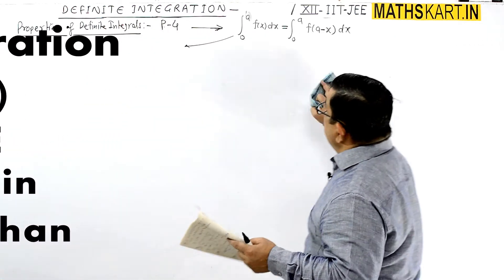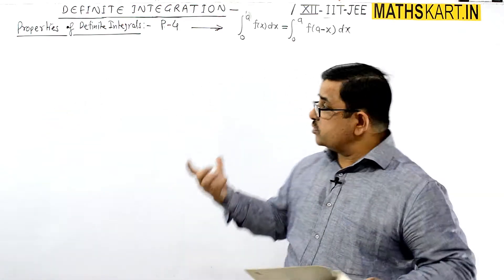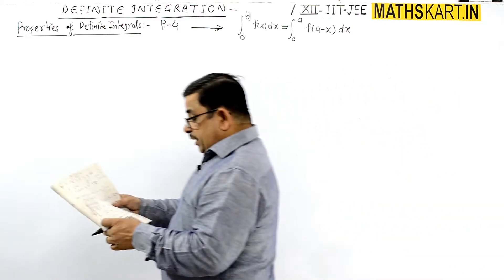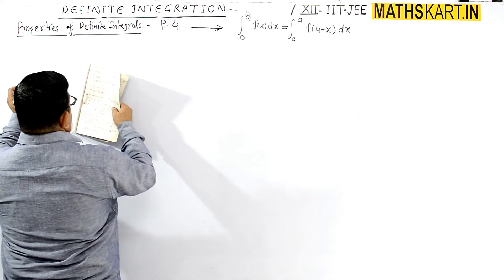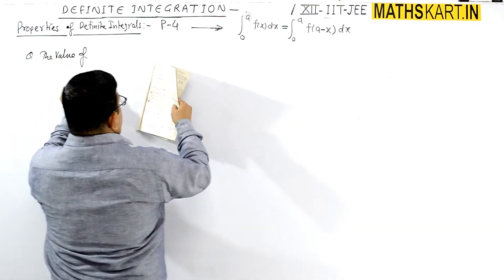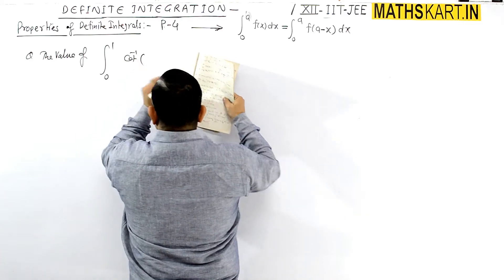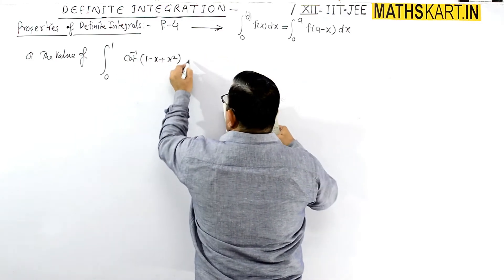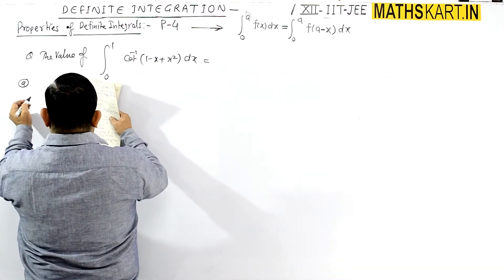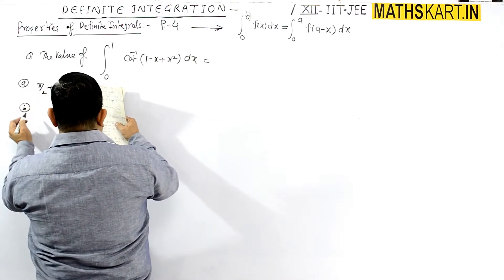Next question on properties of definite integrals. The value of the integral from 0 to 1 of tan inverse of (1 minus x plus x squared) into dx equals to — options given: A option is pi by 2 plus ln 2, B option is pi by 2 minus ln 2.